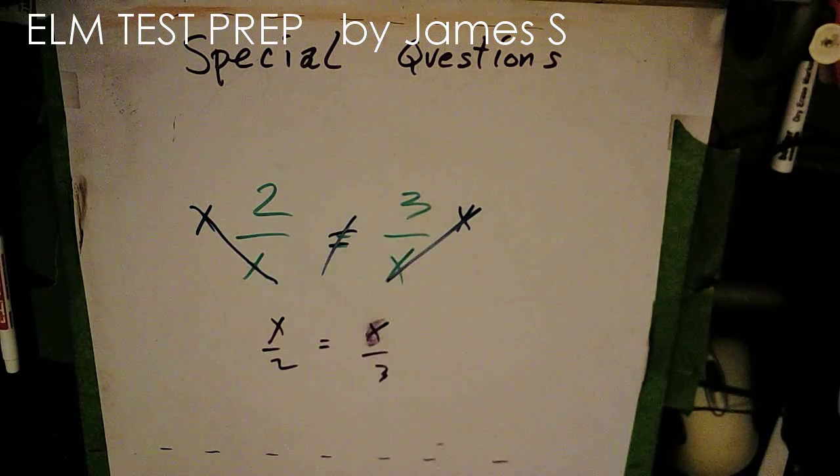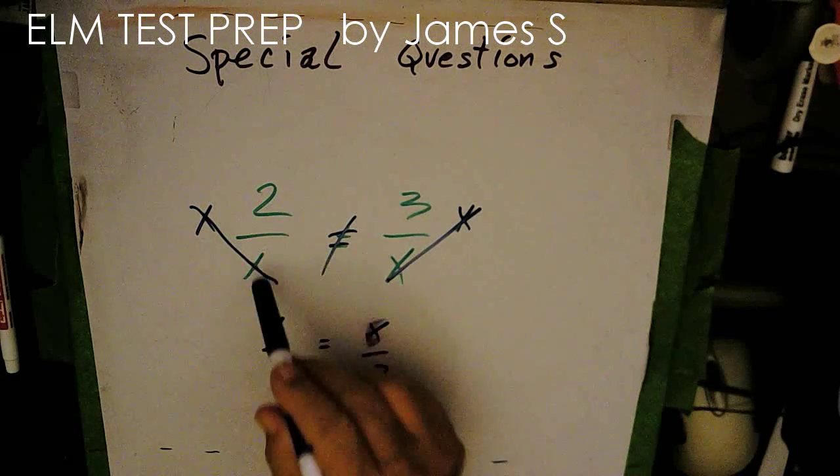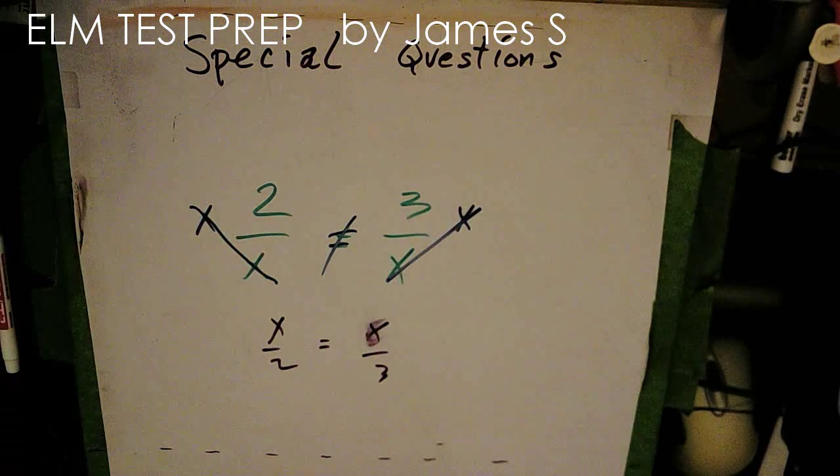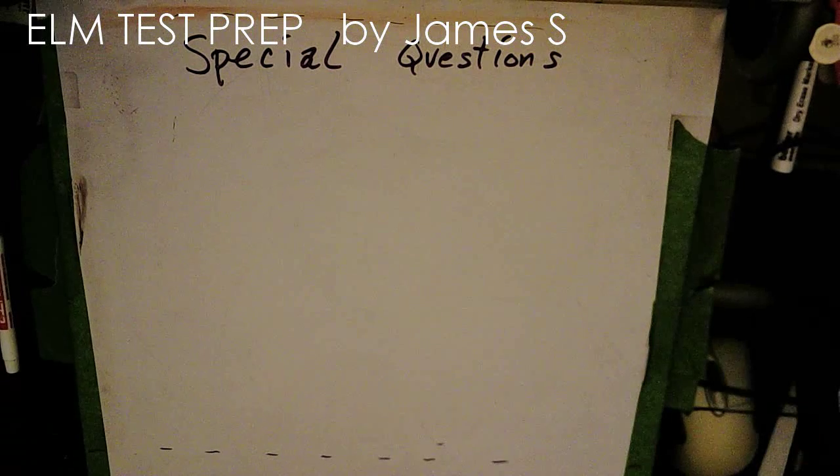Well, 2 does not equal 3. So the initial statement that 2 over x equals 3 over x, well, that was obvious that those two were in no way the same. So it still ended up being untrue.